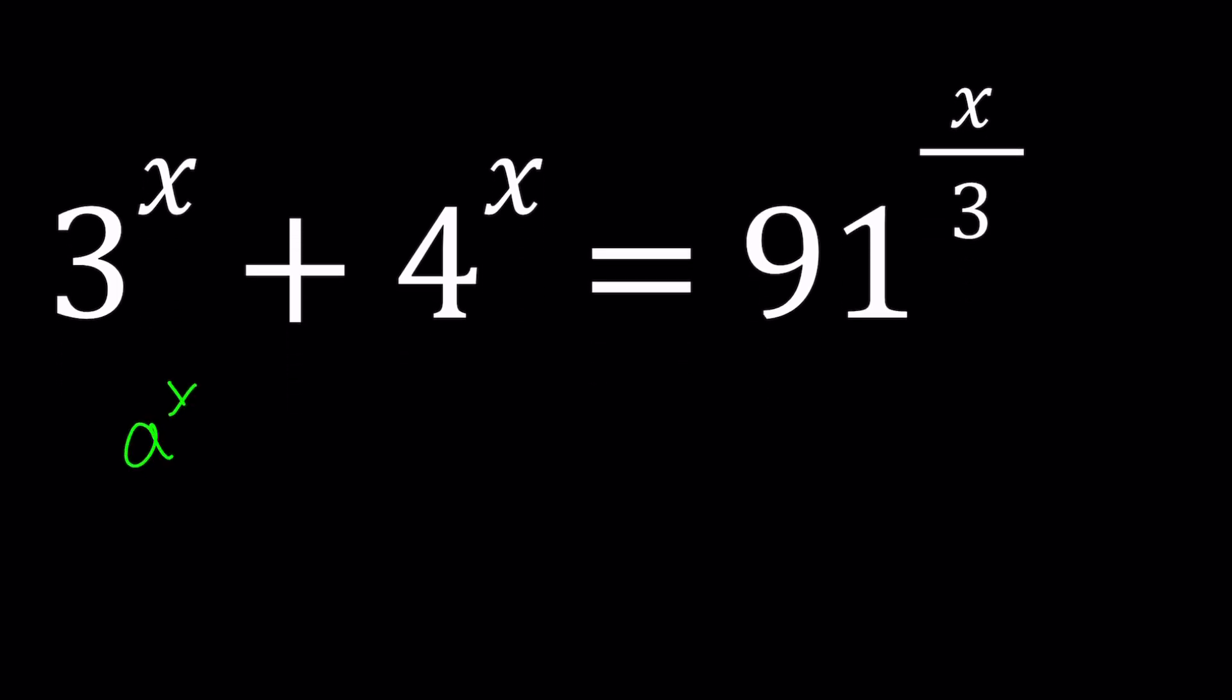In general, we can write these types of exponential equations as a to the power x plus b to the power x equals c to the power x, where a, b, c are the bases. And when the bases are different and they're not related like 2 and 4 or 4 and 8 or 9 and 27, then there's no way for us to simplify this any further because we can't combine 3 to the x plus 4 to the x.